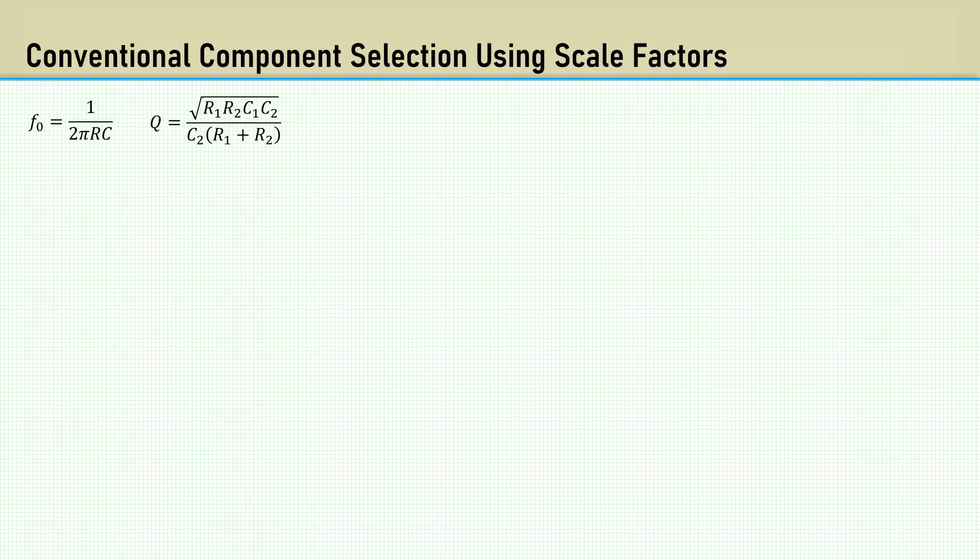Let's begin with a conventional approach for Salen-Key Filter design. Recall the equations from the Salen-Key Analysis video for cutoff frequency and Q. Notice this cutoff frequency formula only contains R and C. Those are the values you can use if R1 equals R2 and C1 equals C2.